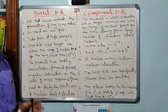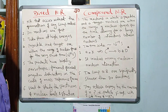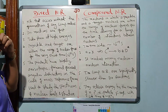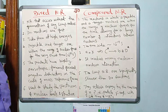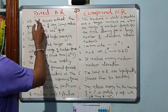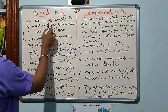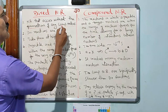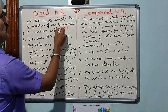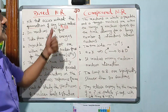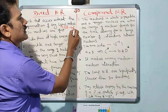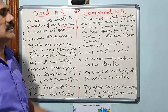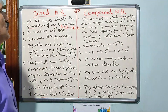First, let us see the main points we can observe in the direct nuclear reaction. It is a type of nuclear reaction in which it occurs without the formation of any compound nucleus in between. If you consider the general equation A plus B as the two particles undergoing nuclear reactions, they give rise to products C plus D directly without any formation of a compound nucleus in between. That is called direct nuclear reaction.